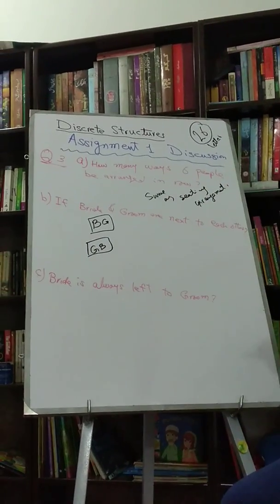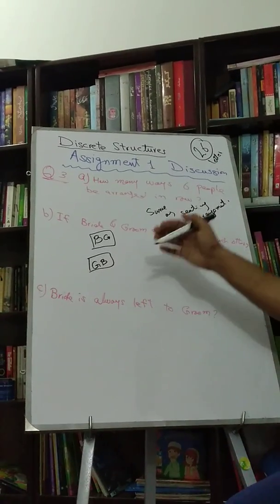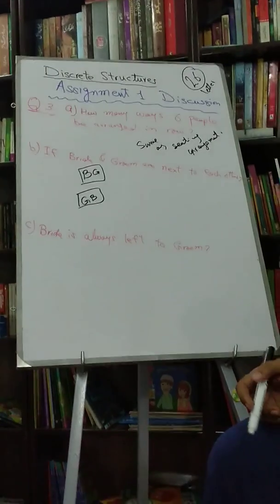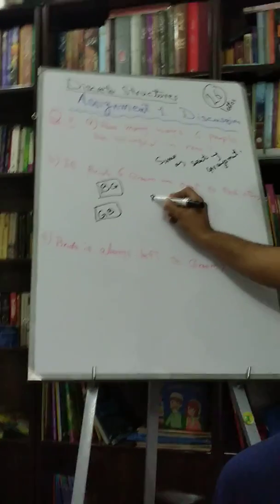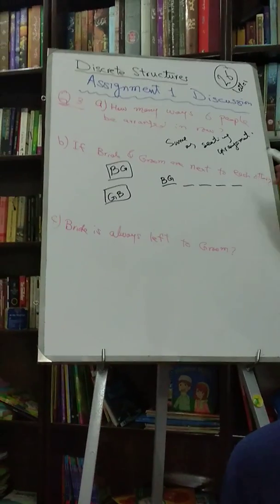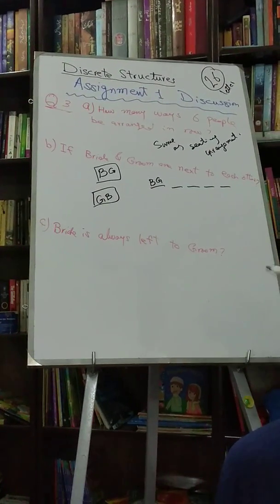So they always have to be together. So in other words we have how many people now? Or how many objects now? Or how many blocks we have? One block is B and G, and then we have four other blocks for guests.